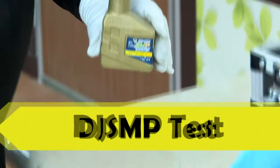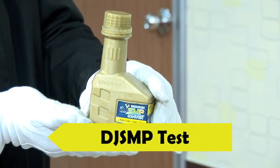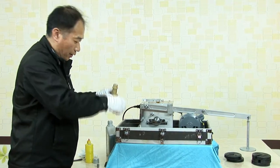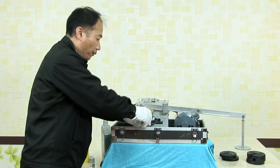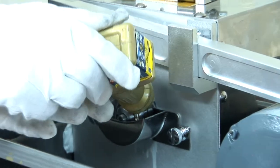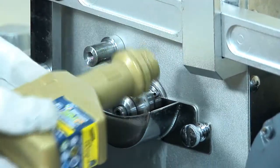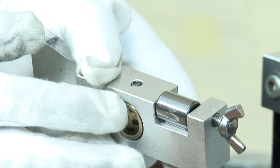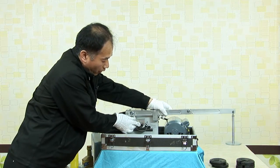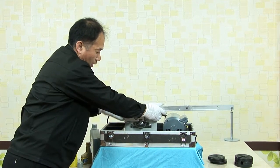Now, let's run the test with DJ SMP. I'll add a little DJ SMP to the engine oil here. And I will attach an abrasion test bearing with a new surface onto the testing machine. I'm attaching it the same way I did before.